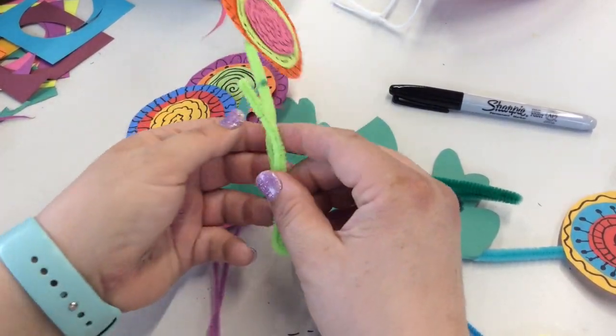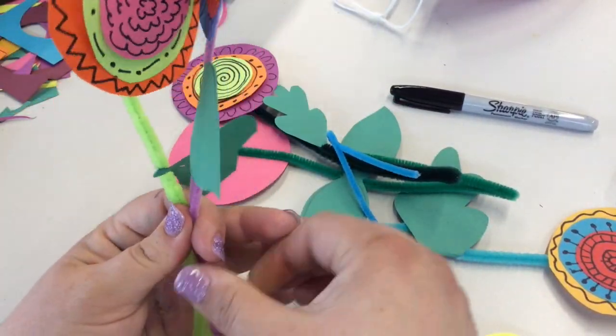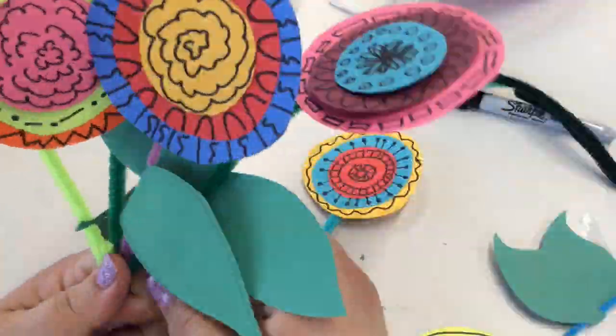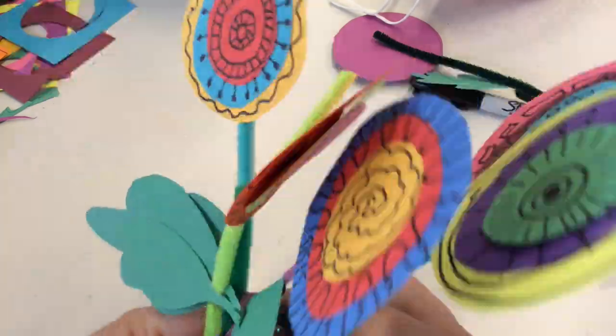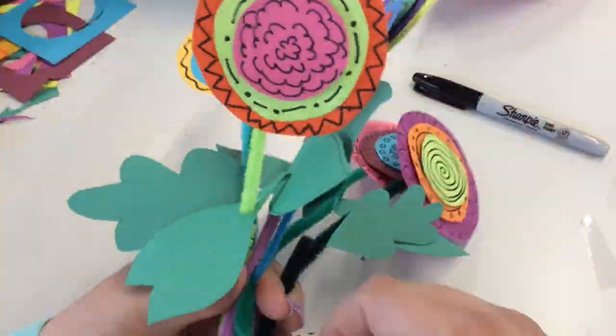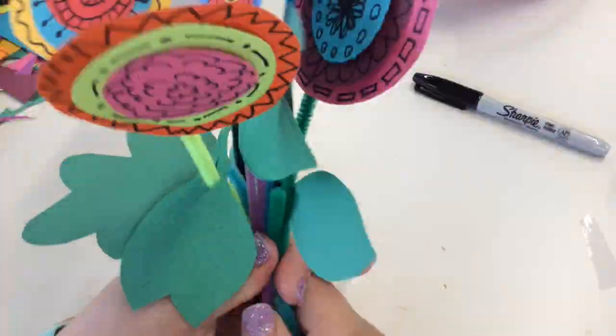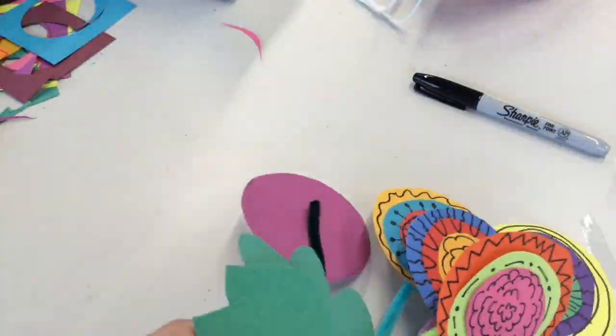Take your flowers and the bottom part of the stem fold in half just gently. This next part is not an exact science. Gather all of your flowers together and then gently just put a couple of solid twists in the bottom to hold all the flowers as one unit.